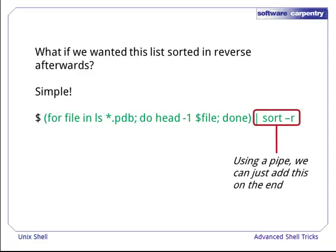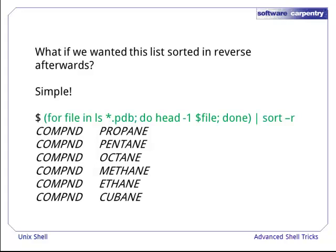So we just add the sort command to the end of this via a pipe. The minus r argument just means sort the list in reverse. And we get our previous list sorted in reverse. So we can happily use this technique within the pipes and filters model we've already learned.